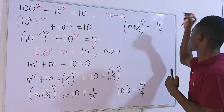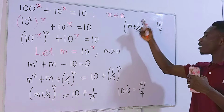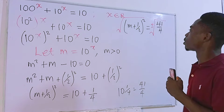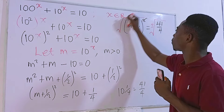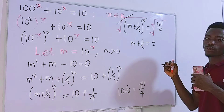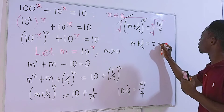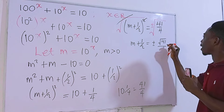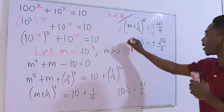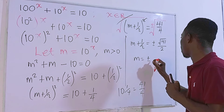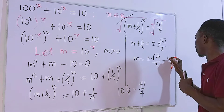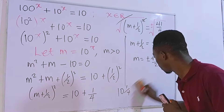To solve for m, we take the square root of both sides. The square cancels on the left, giving m + 1/2 = ±√(41/4). We can simplify the right side: √41 divided by √4, which is √41 over 2. Transposing the positive 1/2, we get m = ±√41/2 − 1/2.